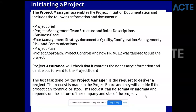The last task done by the project manager is to request to deliver the project - the request is made to the project board, who will decide if the project can continue or stop. The request can be formal or informal. At this point the project board has already approved, so in 99% of cases they will approve. Only if they had given a conditional go during the SU stage - sometimes you get a conditional approval where they say they're okay but they don't have enough information - they will further review in the initiation before approving for the next stage. These are called conditional approvals.